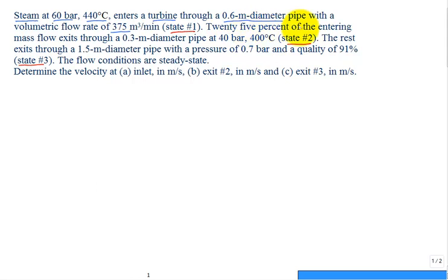25% of the entering mass flow exits through a 0.3 meter diameter pipe at a different pressure of 40 bar and 400 degrees C, call that state two. The rest of the steam exits through a 1.5 meter diameter pipe with a pressure at 0.7 bar and quality of 91%. The flow conditions are steady state.